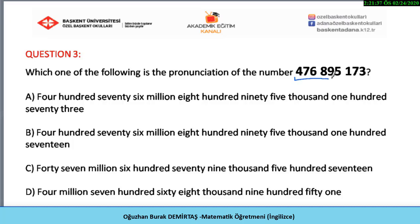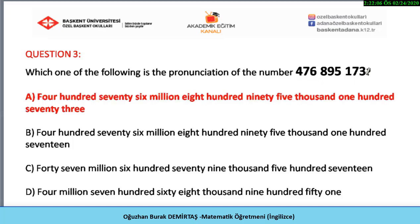Question three: which one of the following is the pronunciation of the number shown? Please stop the video to answer the question. Write the pronunciation of the number and then compare your answer with the correct answer. The correct answer is A: four hundred seventy-six million, eight hundred ninety-five thousand, one hundred seventy-three.